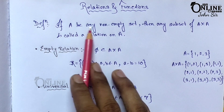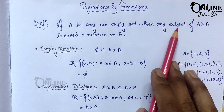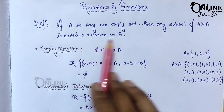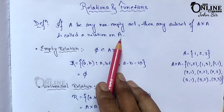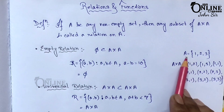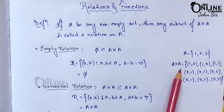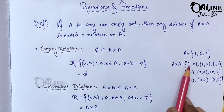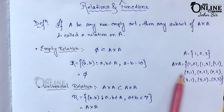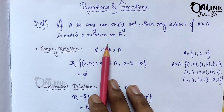The definition: if A be any non-empty set, then any subset of A cross A is called a relation on A. Remember that — the relation is on A, so you have to mention that. For example, if A = {1, 2, 3}, then A×A = {(1,1), (1,2), (1,3), (2,1), (2,2), (2,3), (3,1), (3,2), (3,3)}. Any subset of this set is called a relation.